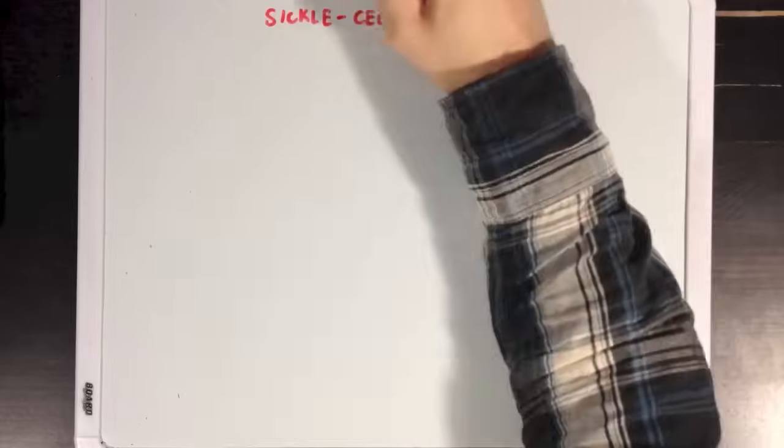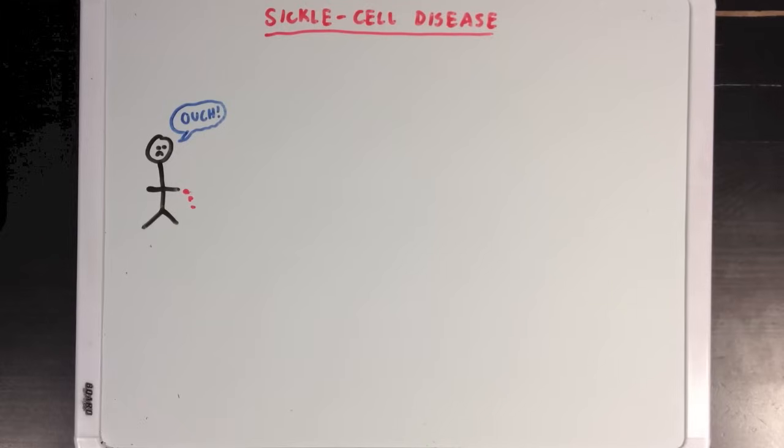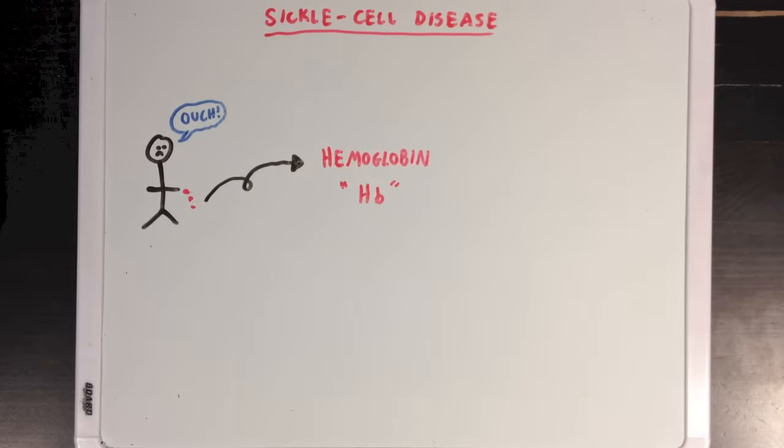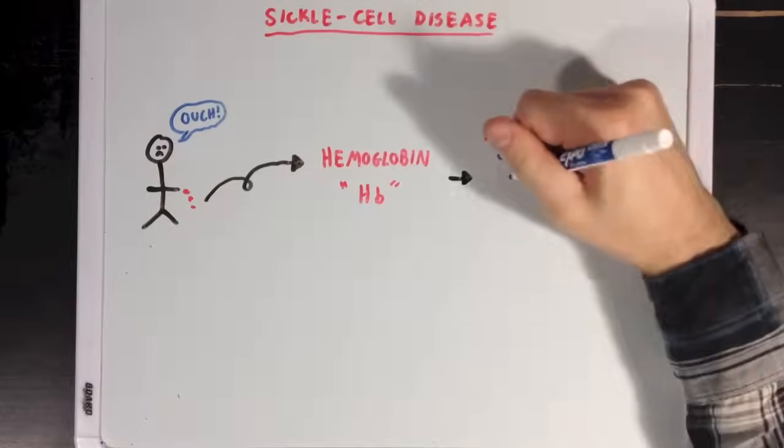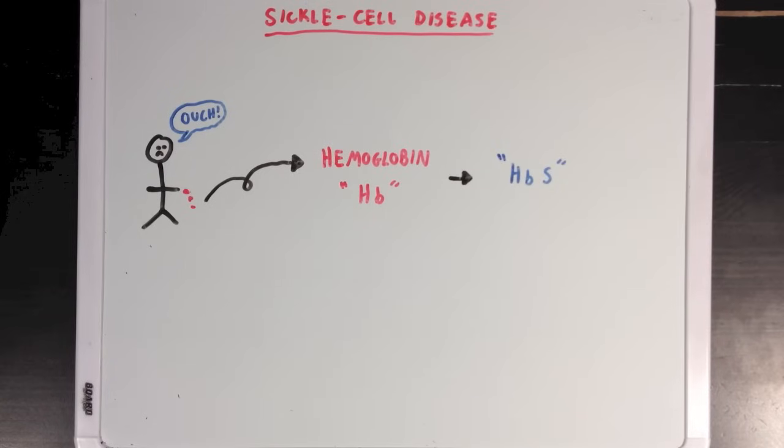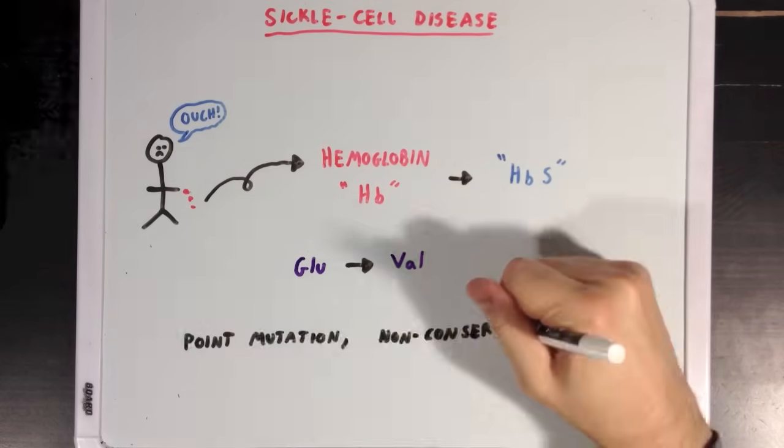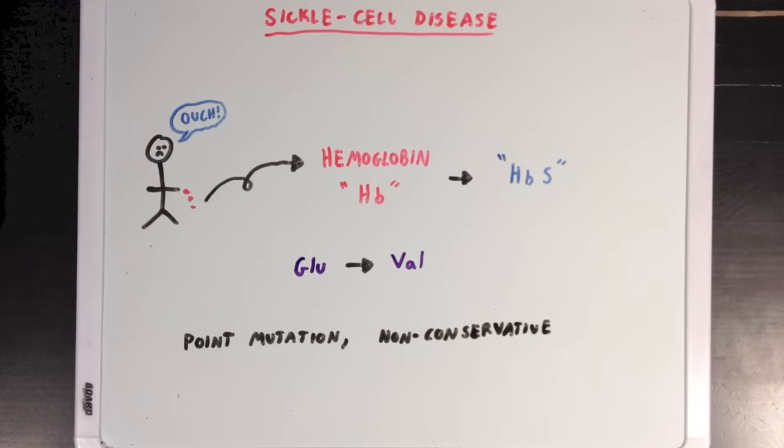So let's look at a quick example. Sickle cell disease is a disorder where hemoglobin, or HB, which is a protein found in human blood, is mutated into a less active form, which we're going to call HBS. And it results from a single glutamate residue being converted into a valine residue. Now we can classify this mutation as a point mutation since only one DNA base is affected, but we can also say that it's a non-conservative missense mutation since glutamate is being swapped out for valine, and the two are different types of amino acids, since glutamate is an acidic amino acid and valine is a non-polar one.